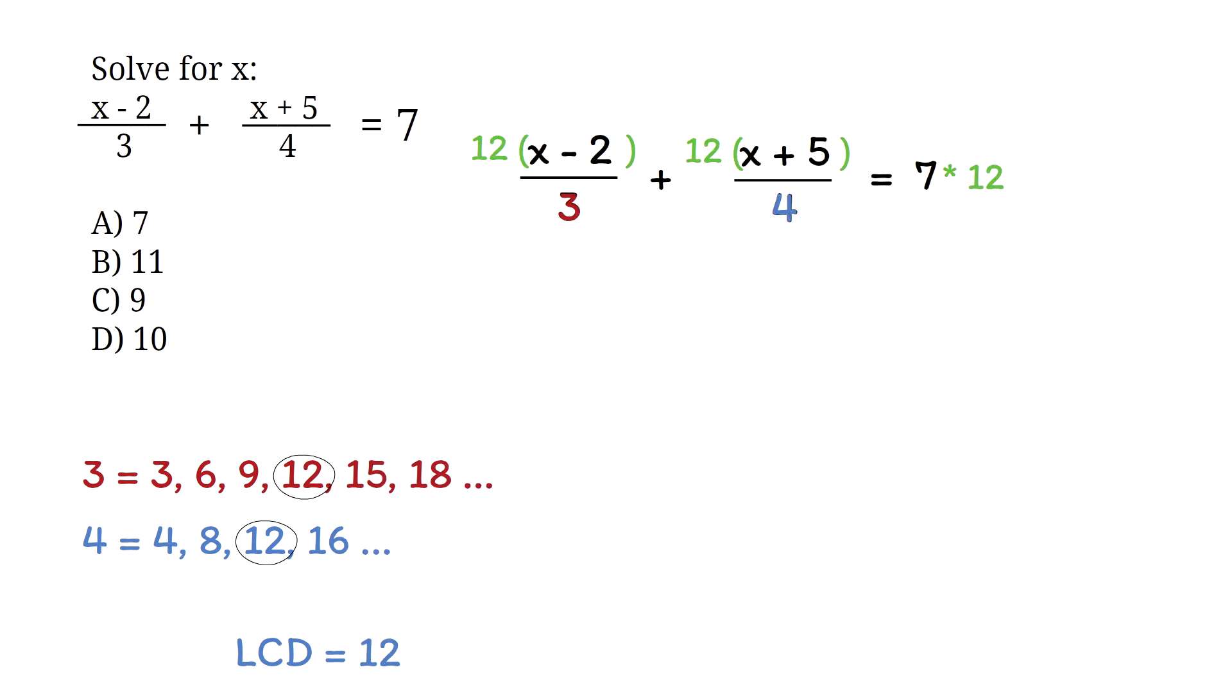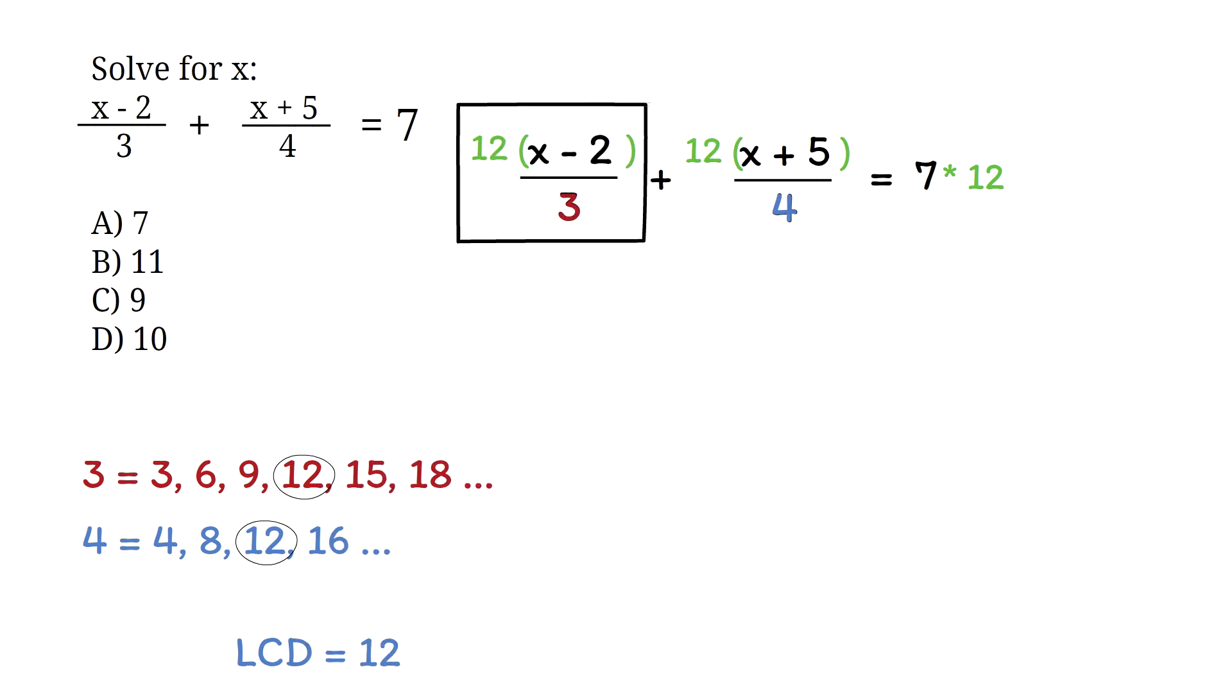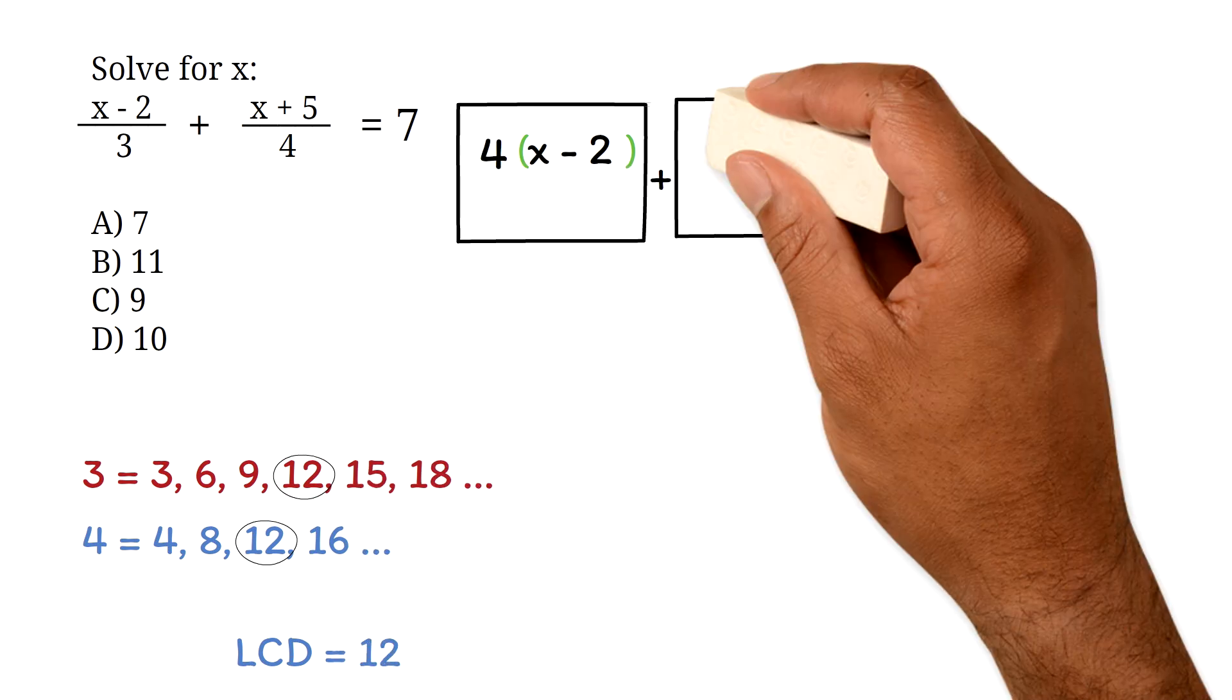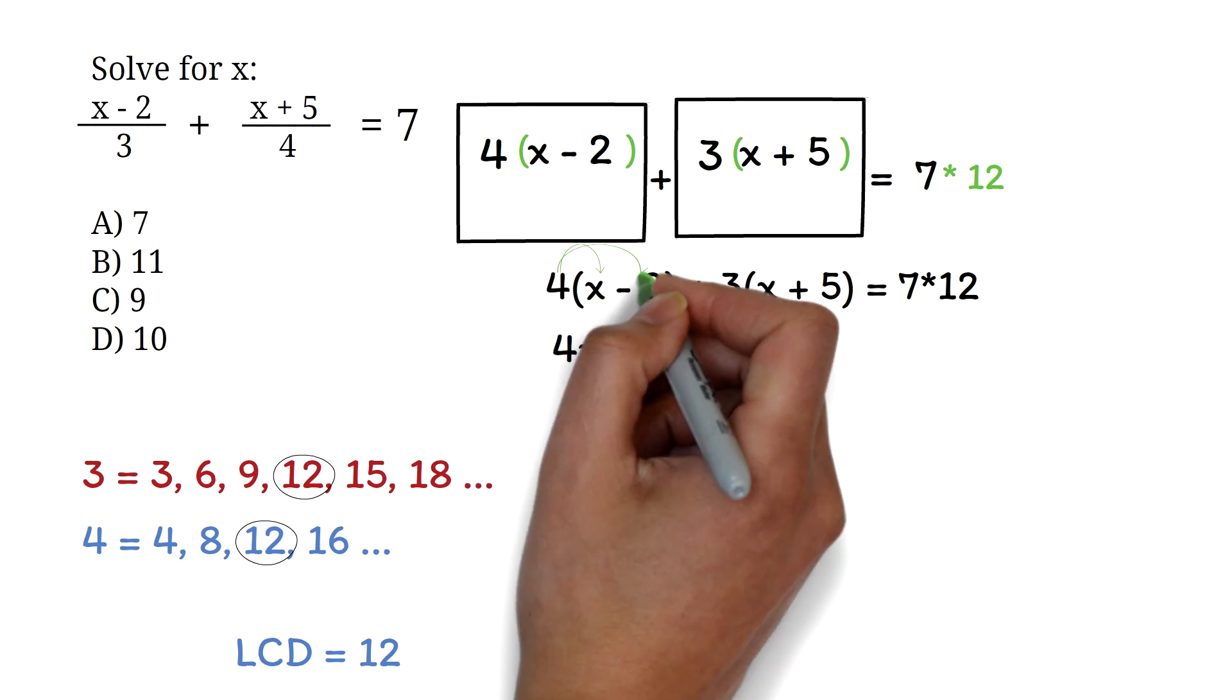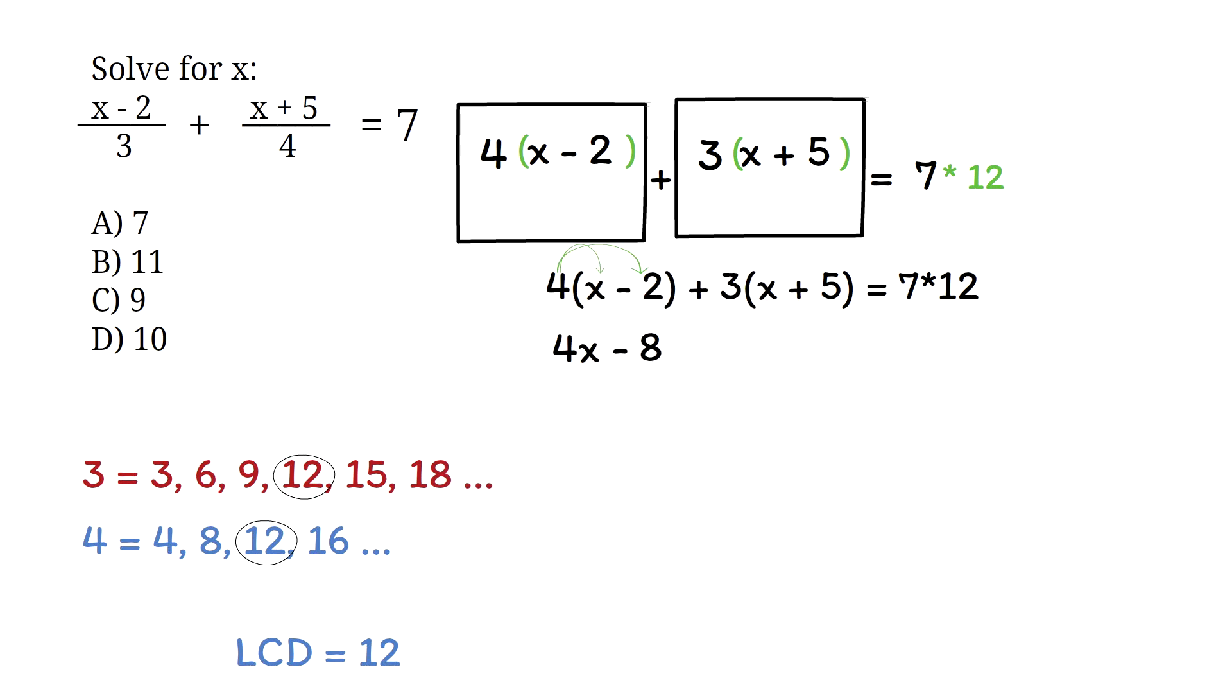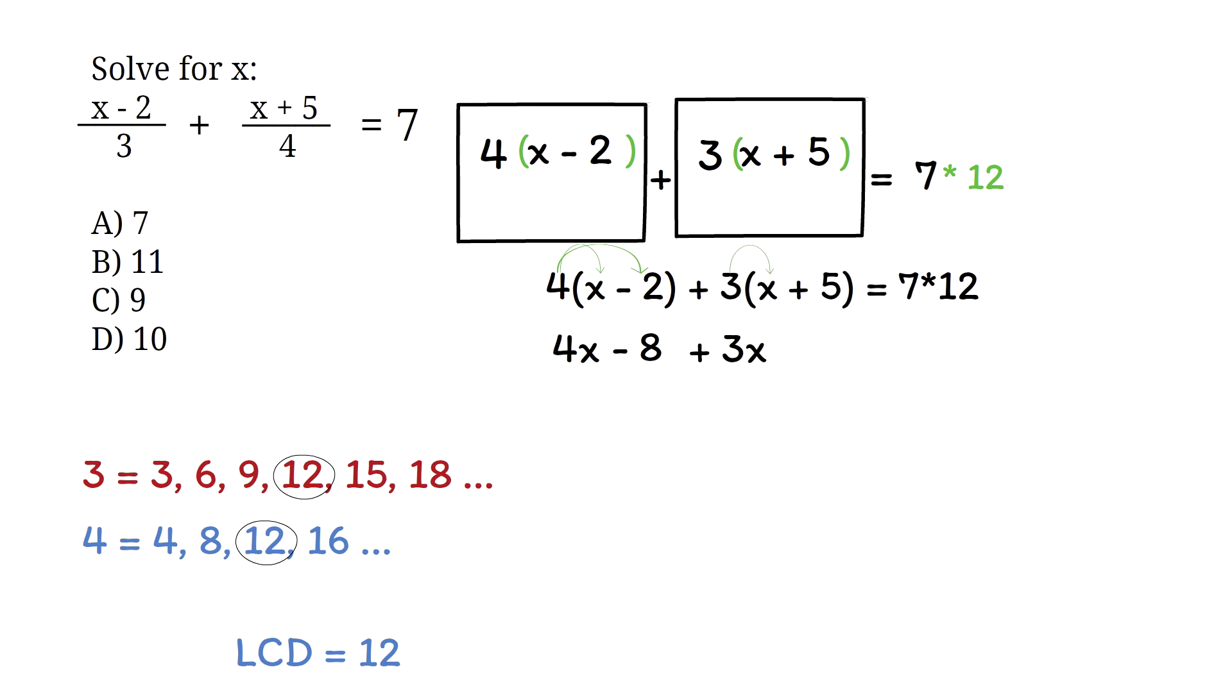Next, we will remove the fractions by reducing the terms. For the first fraction, 12 divided by 3 is 4. For the second fraction, 12 divided by 4 is 3. Now, let's expand and simplify. We multiply each term in the parenthesis by the term outside. We have 4 times x, this is 4x. Then we have 4 times minus 2, which is minus 8. Next, we have 3 times x, this is 3x. Then we have 3 times 5, which is 15. 12 times 7 is 84.